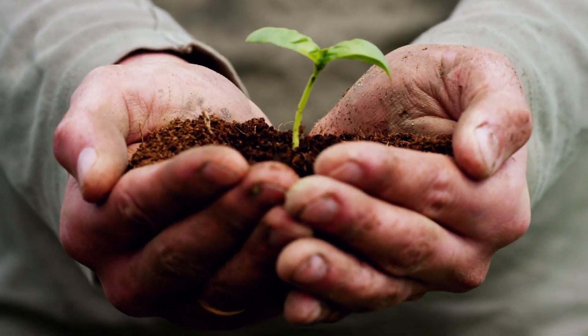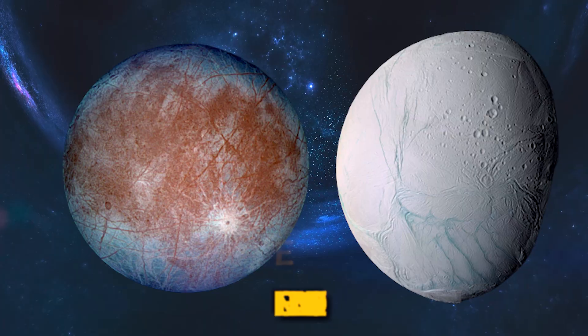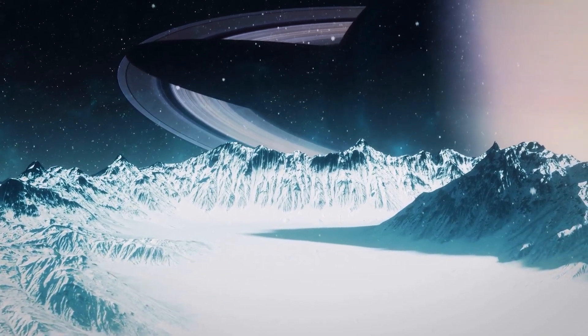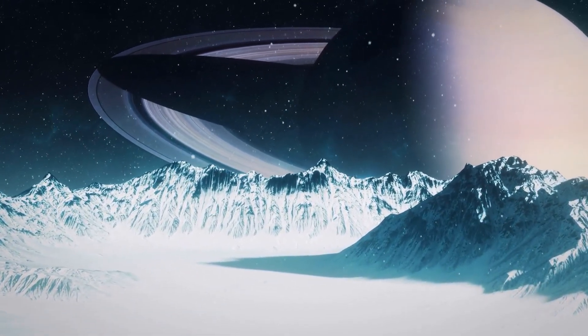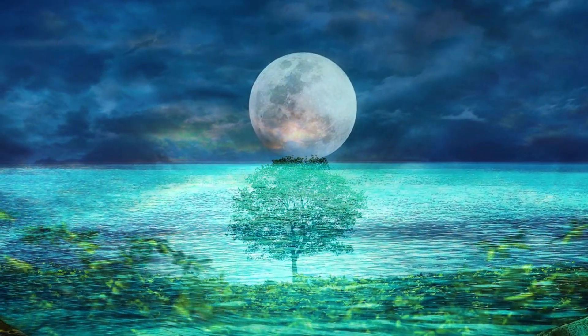Another place where life could exist is in the subsurface oceans of icy moons, such as Europa and Enceladus. These moons have liquid water oceans beneath their icy crusts, and scientists believe that these oceans could provide a habitable environment for life.